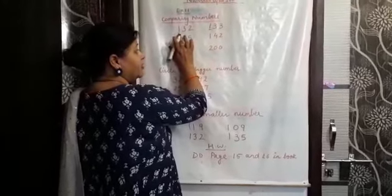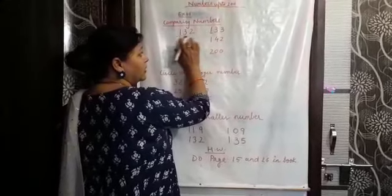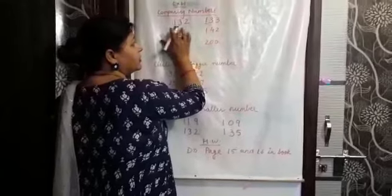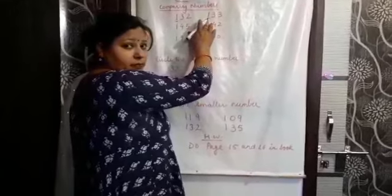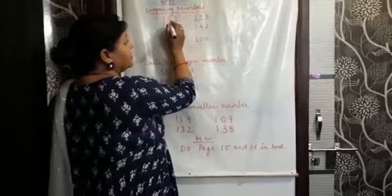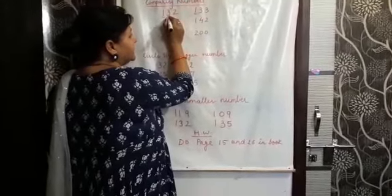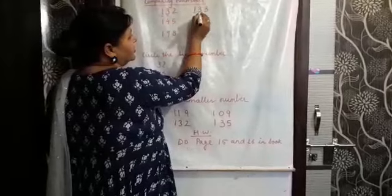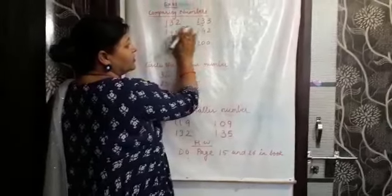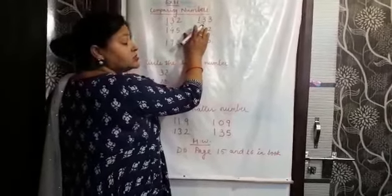What is the number at the hundreds place? It is 1 and 1 — both numbers are the same. So we will move to the next number, which is at the tens place. At the tens place also, both the numbers are the same: 3 and 3.